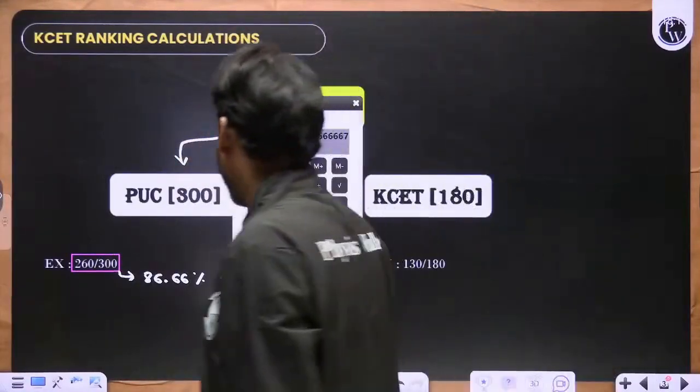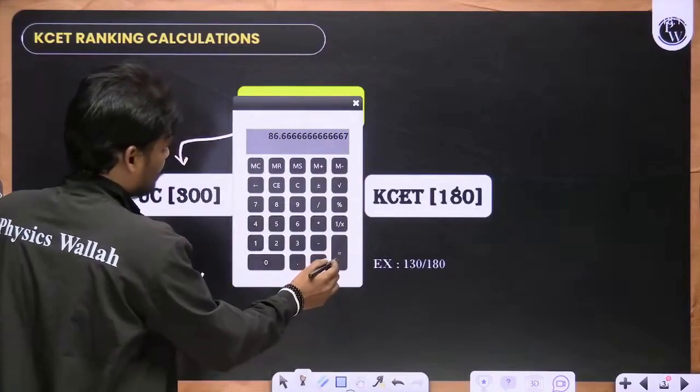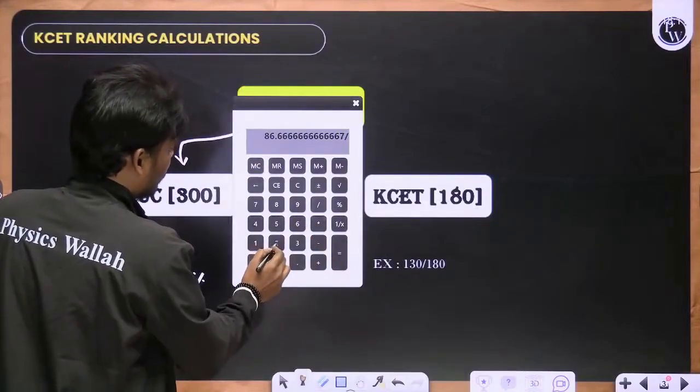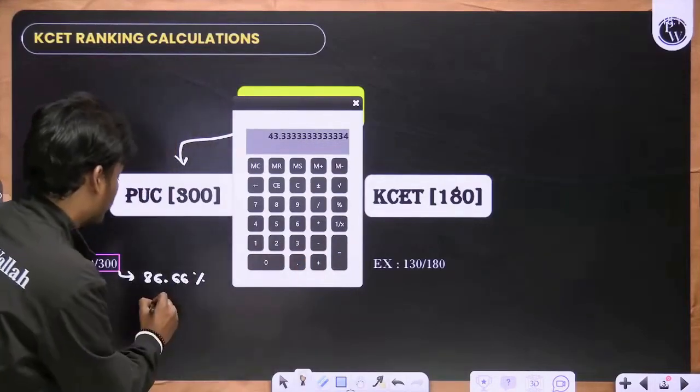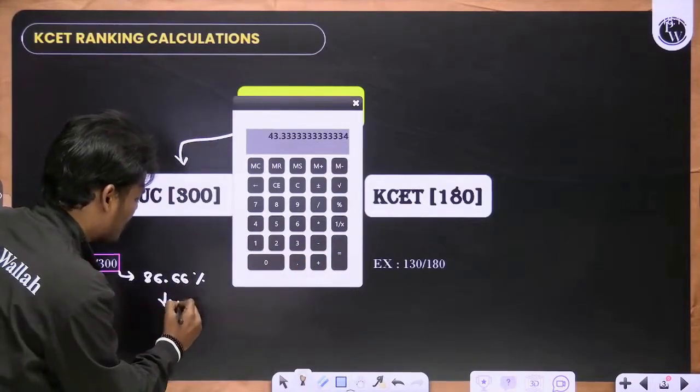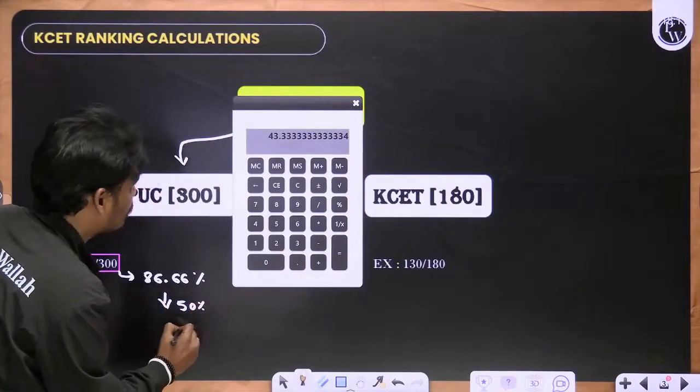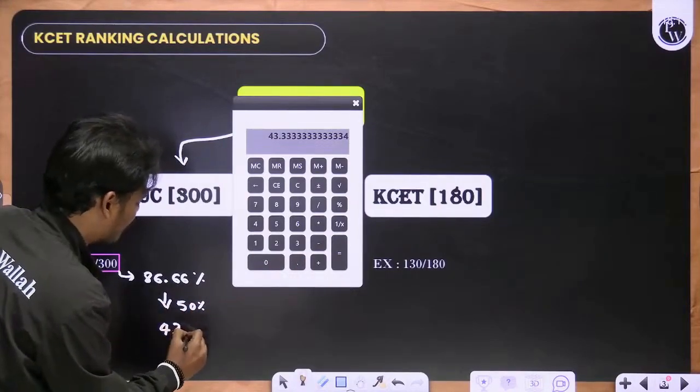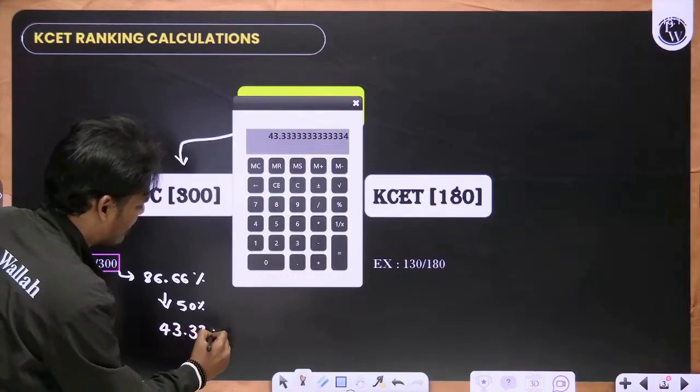From the board, 50 percent will count. So half of this - divide by two. So 50 percent of this percentage, your percentage from board is 43.33 percent.